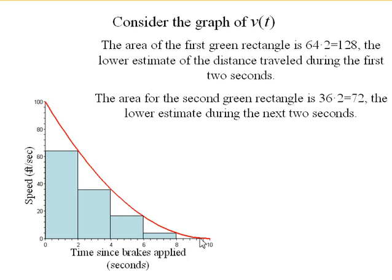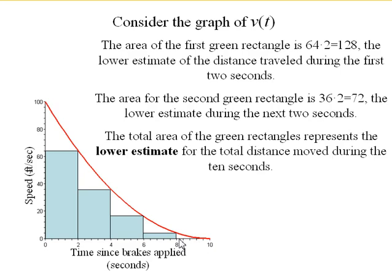And then you can't see the rectangle here because, remember, this last one had a height of 0. But there's a fifth rectangle here. It just happens to have an area of 0. So these five rectangles give us the lower estimate that we calculated earlier, and they're known as the right-hand sums.